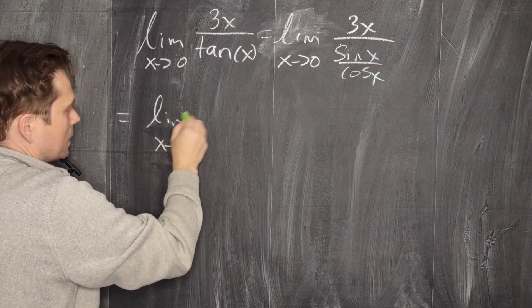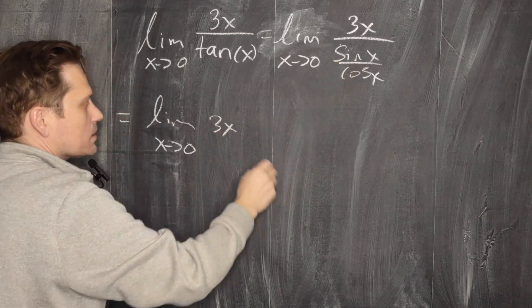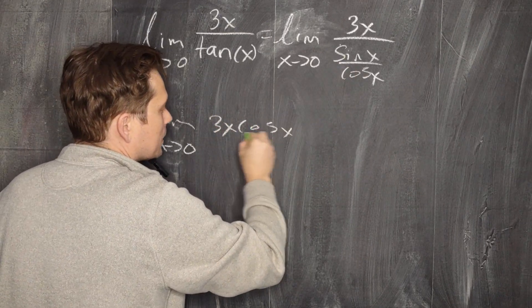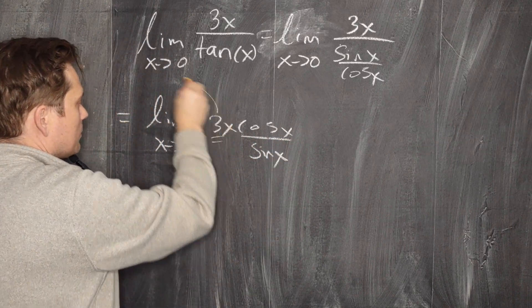Next stage in the process, just keep change flips. So limit as x approaches 0, and now you can say 3x, and then just flip that, so it's going to be cosine of x over sine x.